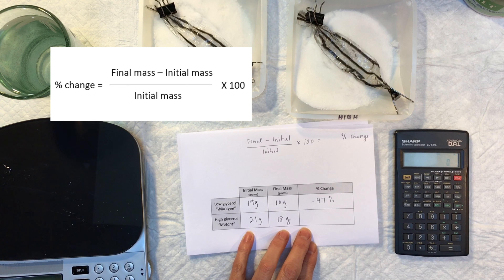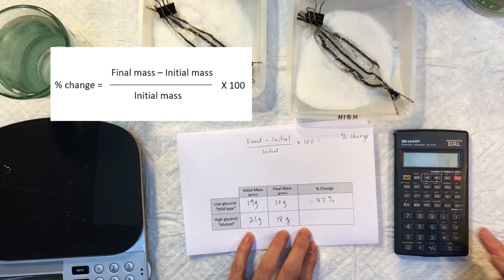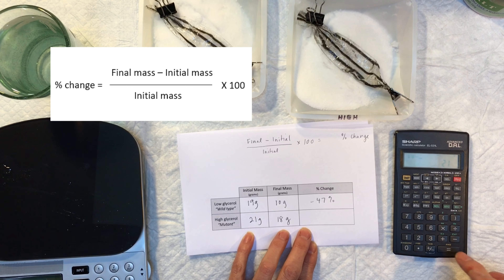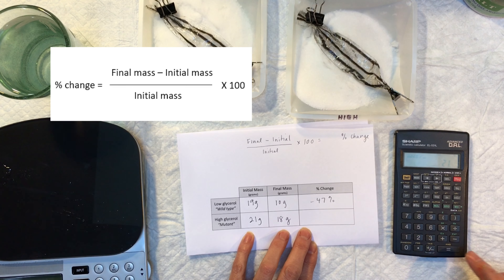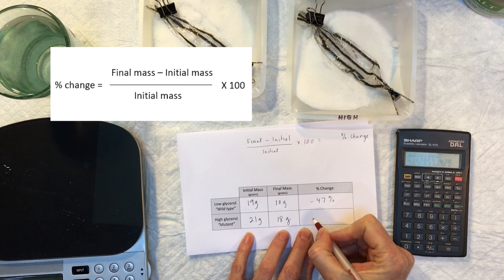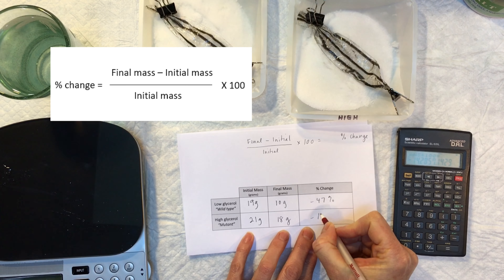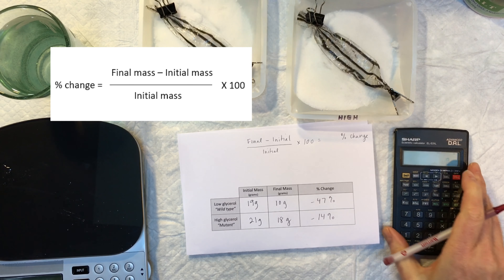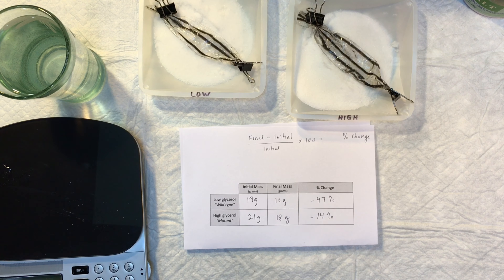Now the percent change for the high glycerol: our final was 18 minus our initial of 21, divided by 21, multiplied by 100 for our percentage — this one has only lost 14%. So the high glycerol made a big difference in how much water moved through the semipermeable membrane out of the tube and into the salt environment.